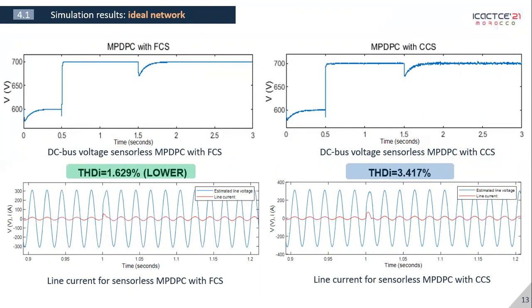You can see that the step response for the DC voltage is on the spot and it can successfully overcome the load change disturbance. The current distortion is sufficiently low for both strategies as well.